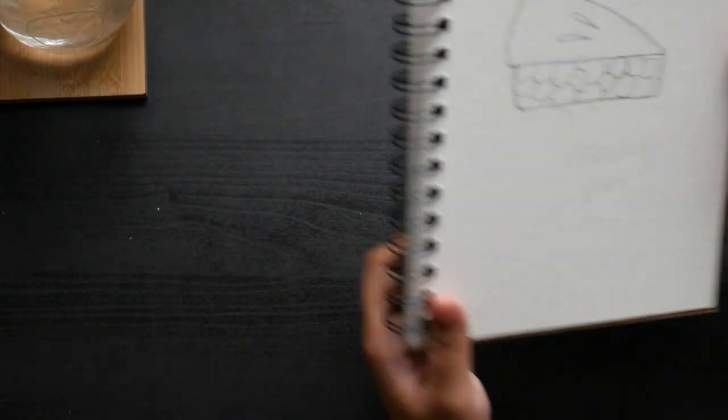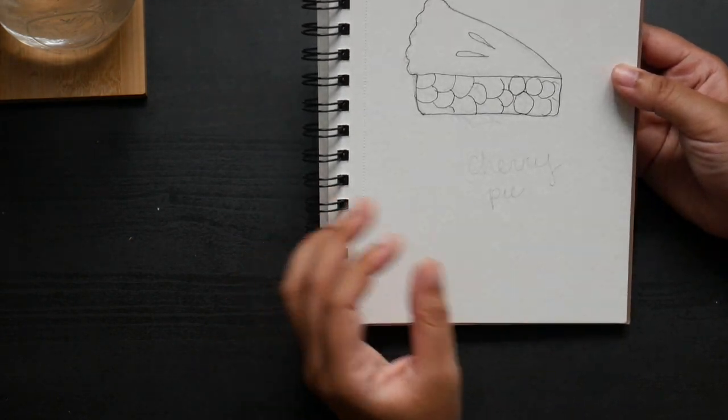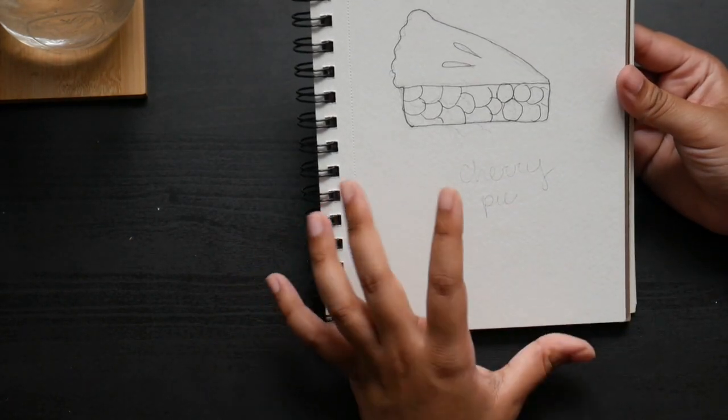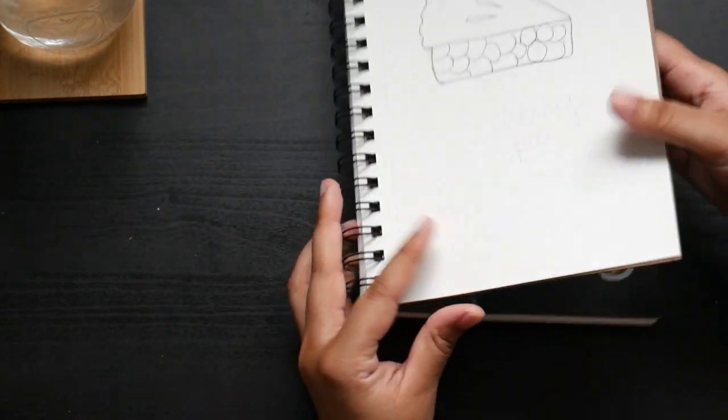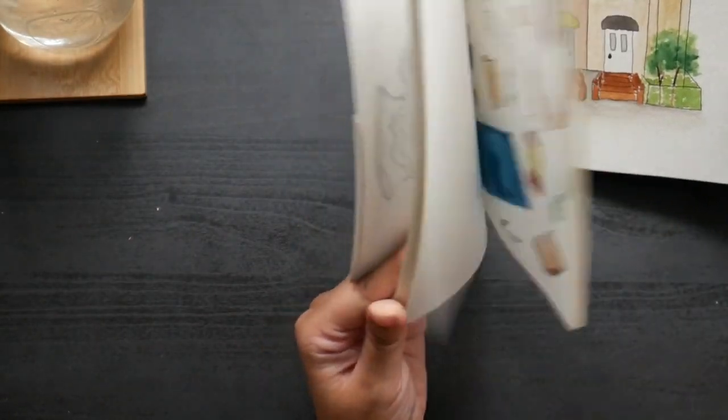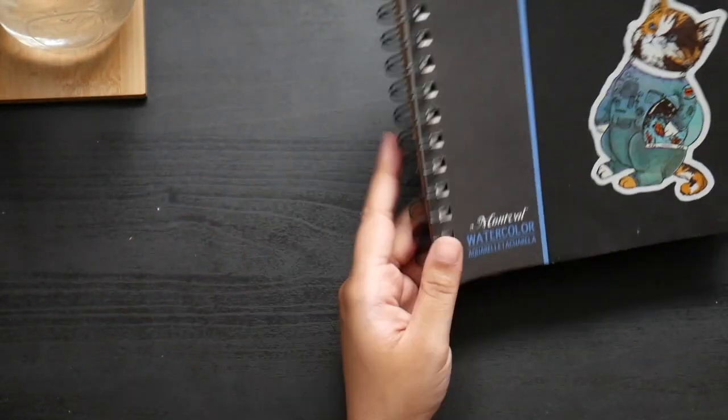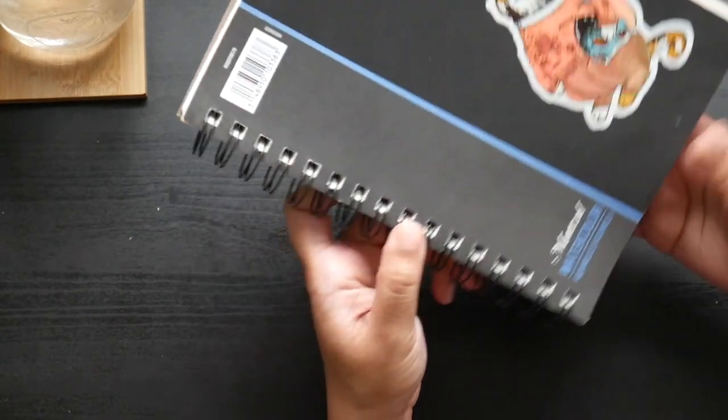Some cherry pie. Definitely was going for the Twin Peaks thing because I don't even like cherry pie. Oh okay, so that's the end of it. And I actually filled this up. I mean I know half of them aren't even full pieces but not bad.